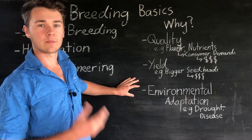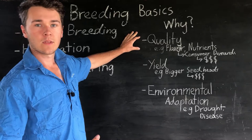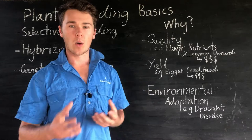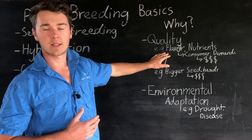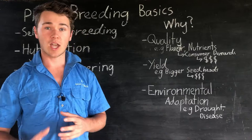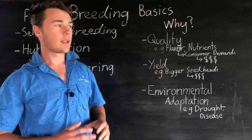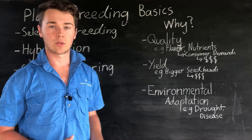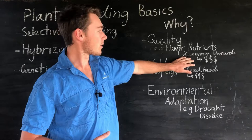Firstly, quality — anything that the consumer demands. So going to the supermarket, why would we want to pick a certain tomato over another? That is consumer demand. We might want to choose one because of flavour, shape — that's the quality. So flavour, nutrients. If we can make a fruit or plant more desirable to the consumer, they'll be willing to pay more, and as a farmer we can increase our profit margins.